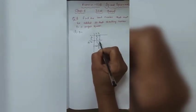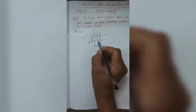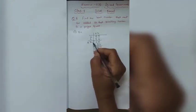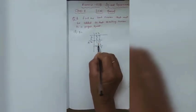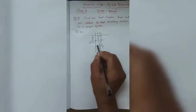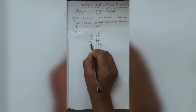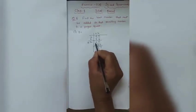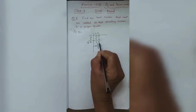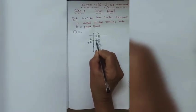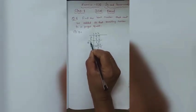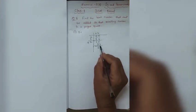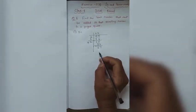Bringing down 11, we get 111. Adding 2 to the divisor gives 42. Now 42×2 = 84. If we try 3, then 43×3 = 129, which is more than 111, so we go with 2. Thus 42×2 = 84, and the remainder is 27.